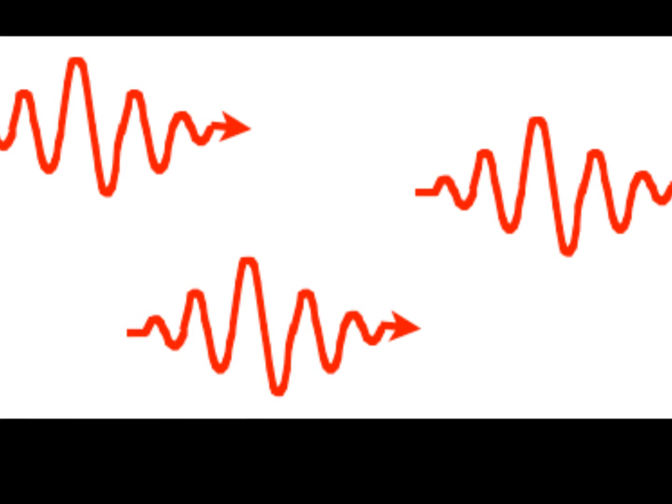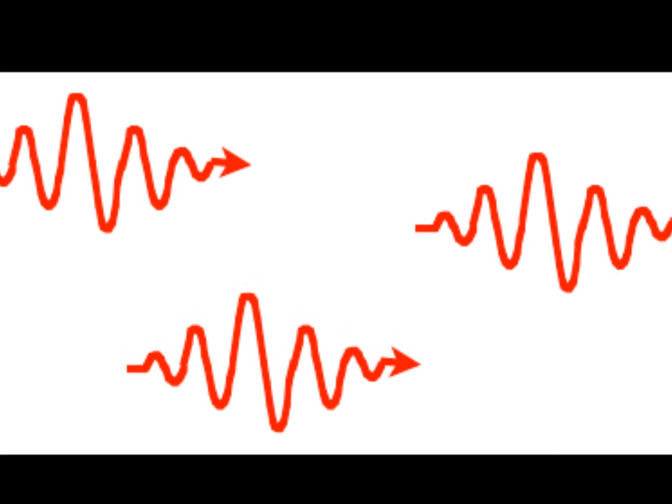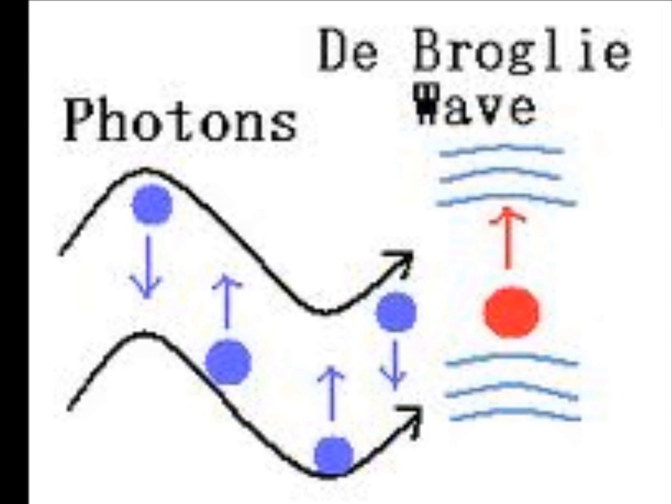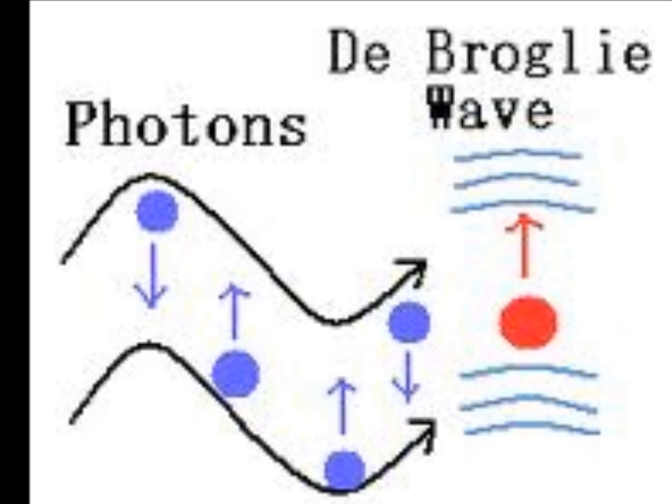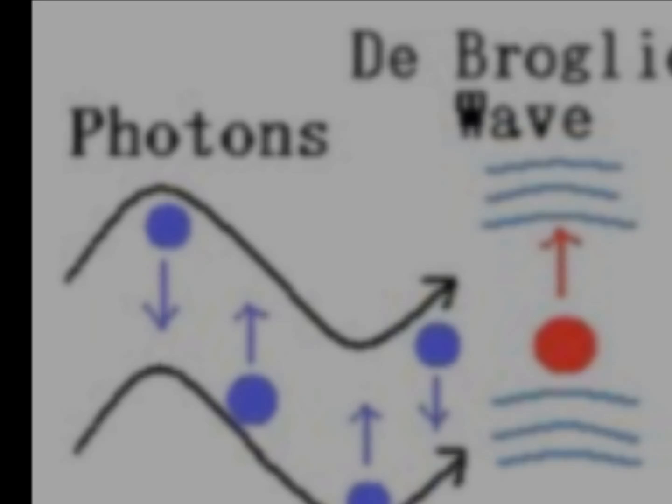On the other hand, light cannot have fractional proportions of energy, something a water wave can have. Light only increases its energy in fixed intervals, which are called photons. Photons are the quantized particles of light which represent the most basic piece of light energy. This explains the nature of fractional components, as one cannot have a piece of a particle.